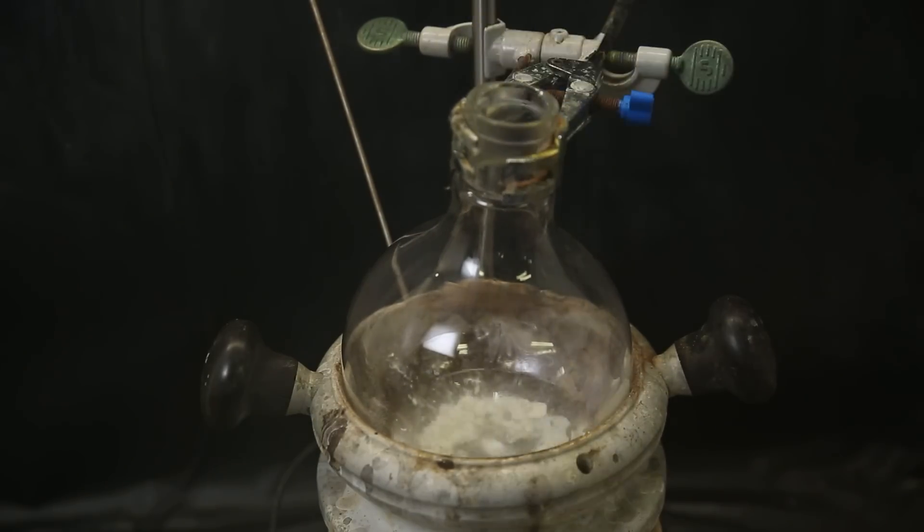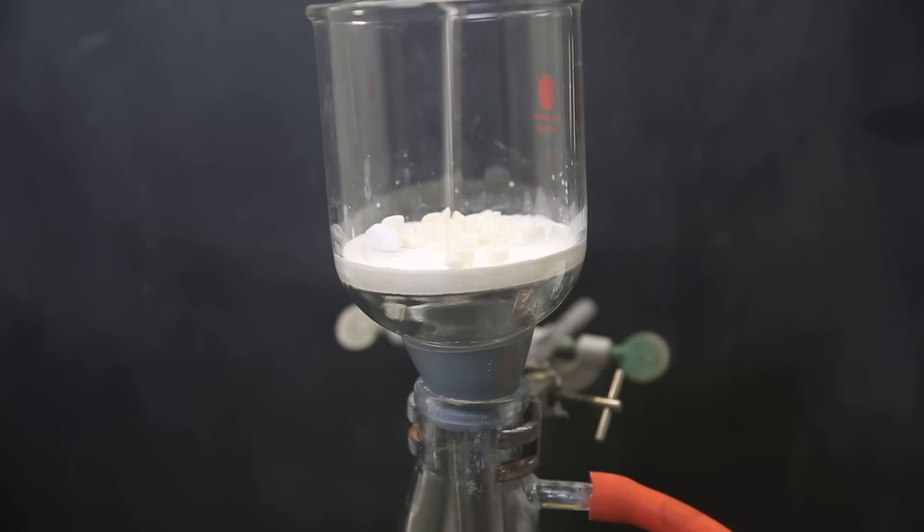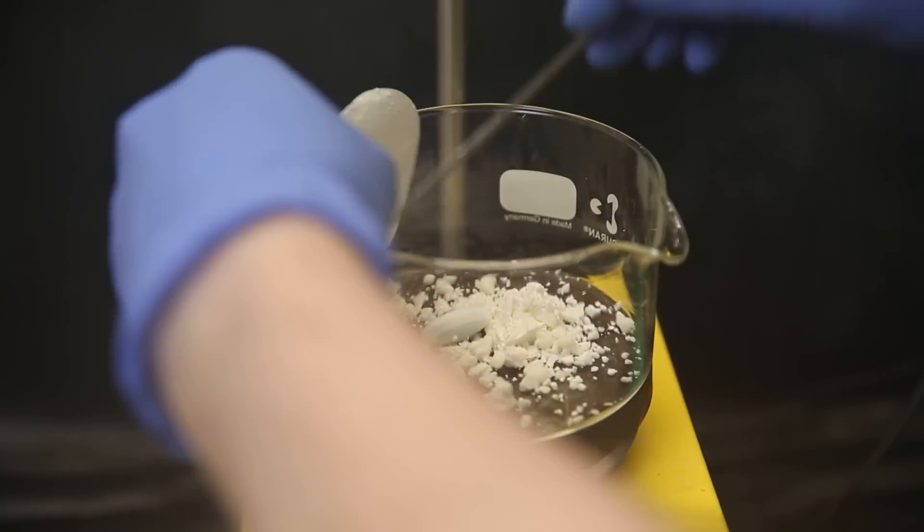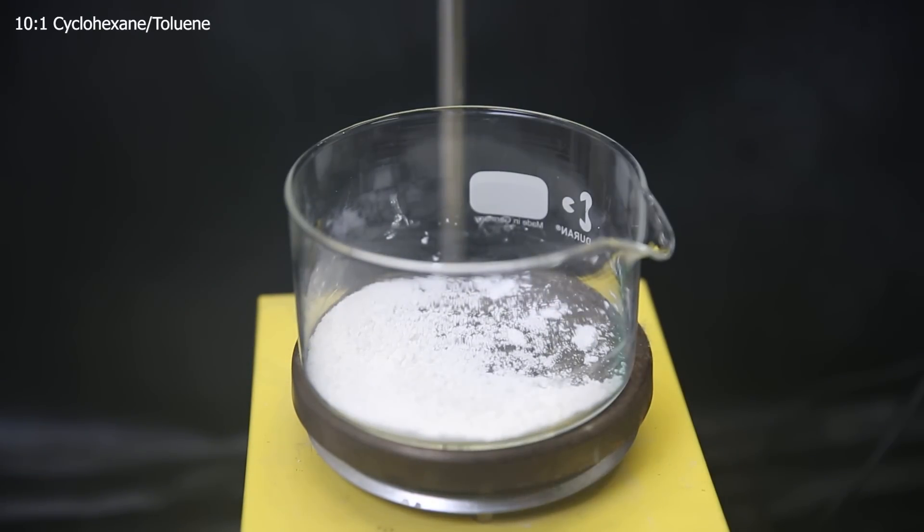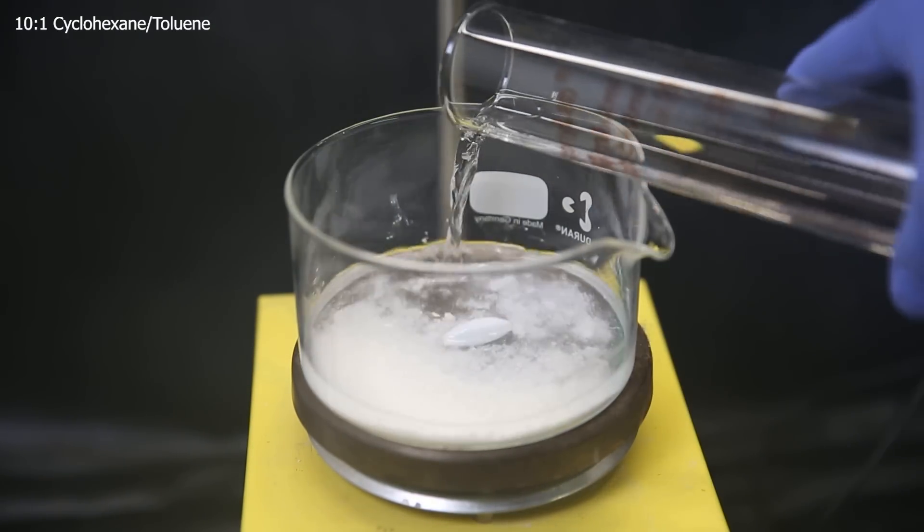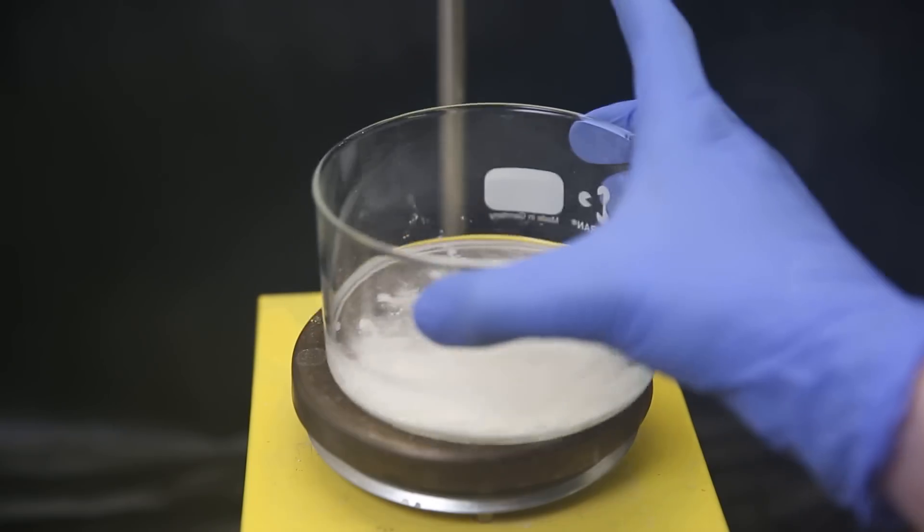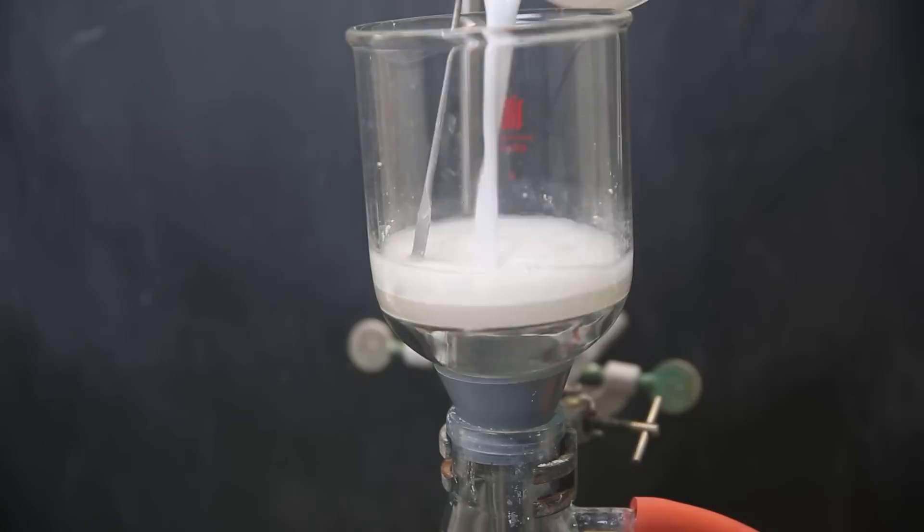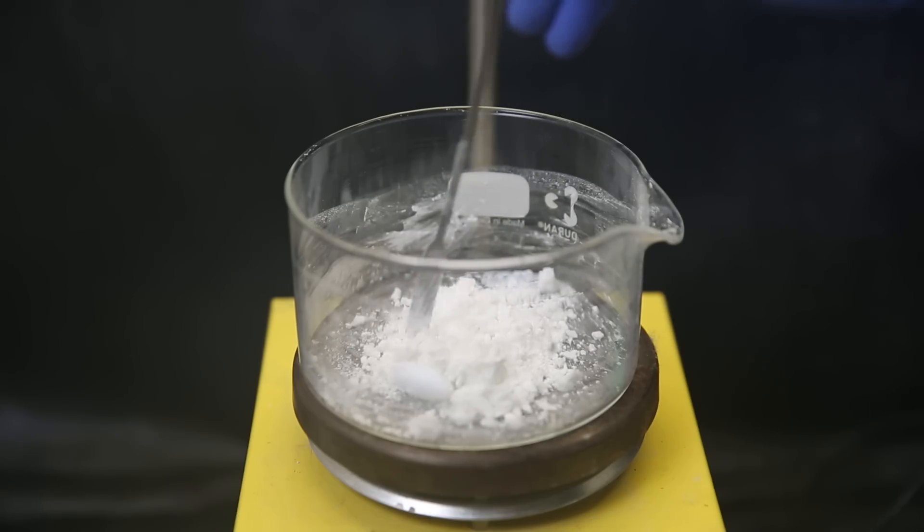I leave that to stir overnight, and afterward it became a lot more white. I set it up for vacuum filtration to collect the solid and then move it to this dish. Since the solid contains some rock-hard chunks, I decided to crush them into a powder with a pestle and redo the washing with the cyclohexane toluene mixture. This step also improves the optical purity of the product, but I don't have a way to measure it. Either way, both enantiomers are active, the S just more than the R. After letting it stir overnight, I again filter out the solid and just move it to the same dish, giving the product as a white powder.